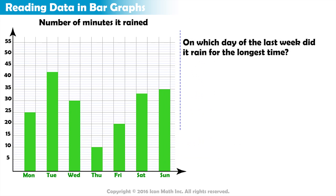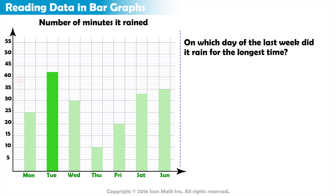On which day of last week did it rain for the longest time? The count increases as we go up, so the day with the longest bar is the day on which it rained the longest. And this is the case on Tuesday.